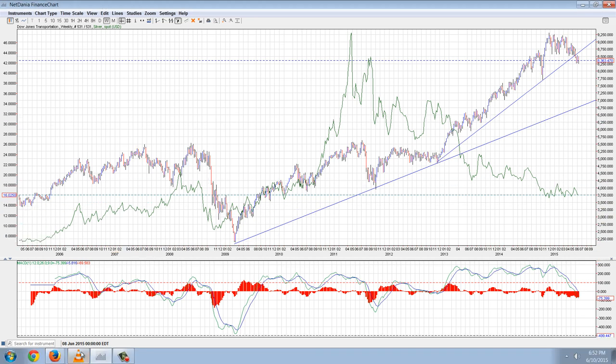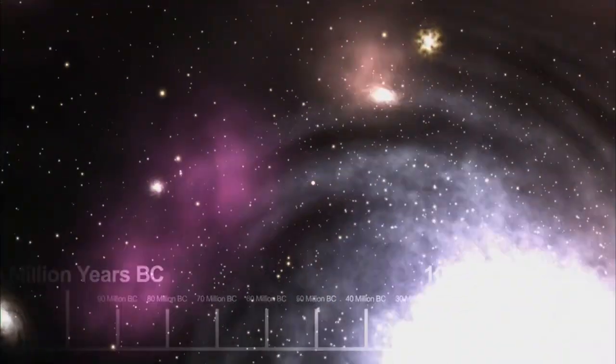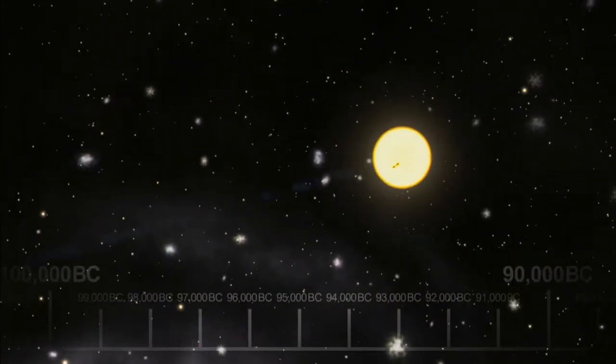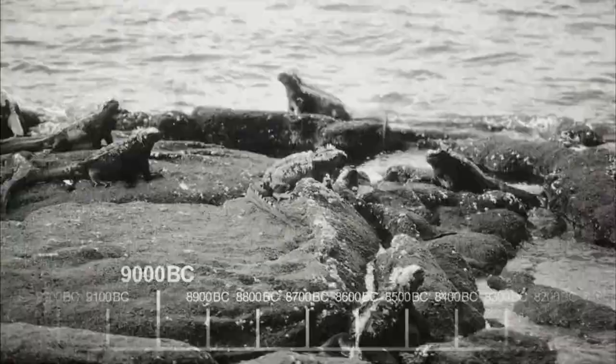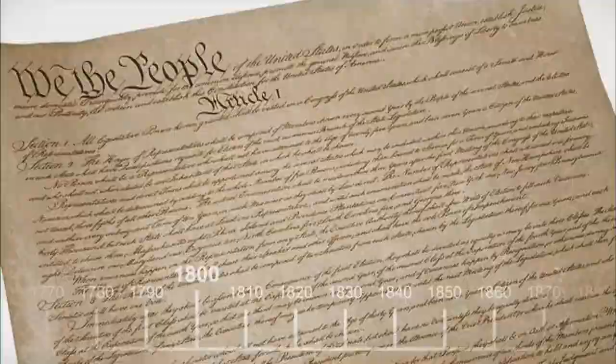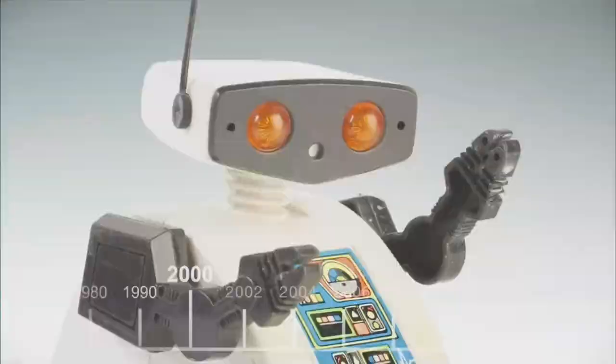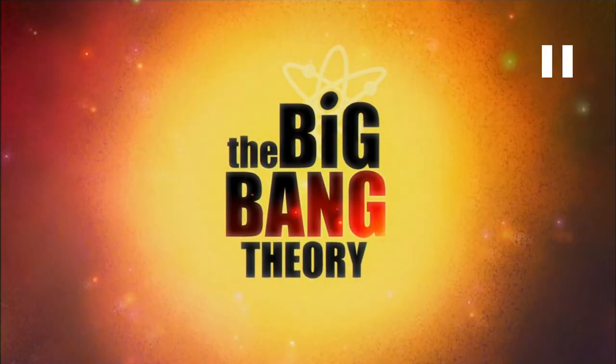It's very interesting because it gives you the history of the evolution of the thought in this area. But before we do that, I want you to look at this is what I would call a summary of the current belief system of the modern world. Our whole universe was in a hot, dense state that nearly 14 million years ago expansion started. The earth began to cool, the autotrophs began to drool, Neanderthals developed tools, we built a wall, we built a pyramid. Science, history, unraveling the mystery that all started with a big bang.